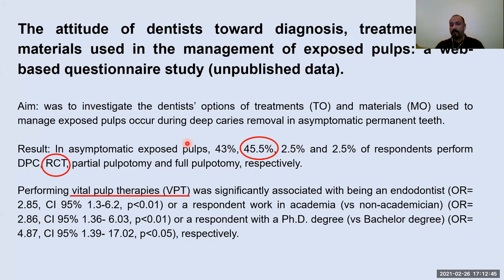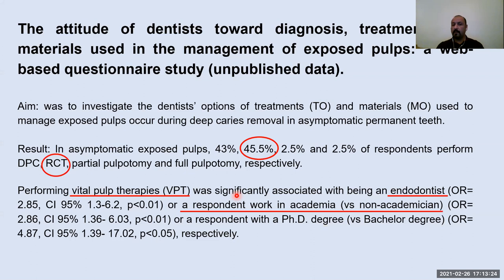We also found that vital pulp therapy — combining all other options: direct pulp capping, partial pulpotomy, and full pulpotomy — choosing this treatment was significantly associated with being an endodontist, because endodontists may be aware of the position statements released a few years ago recommending another option for deep carious lesions or exposed pulps. Persons who work in academia also had a high chance of choosing vital pulp therapy over root canal treatment.